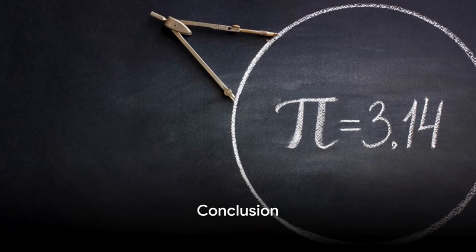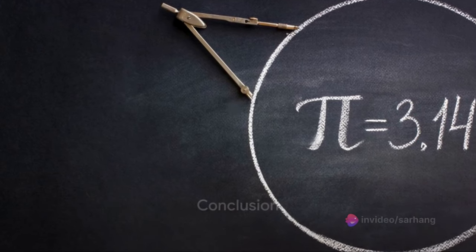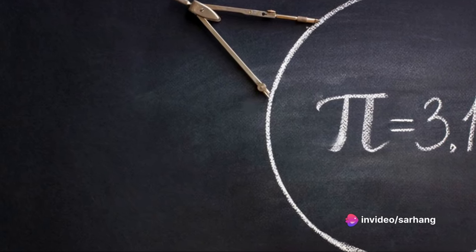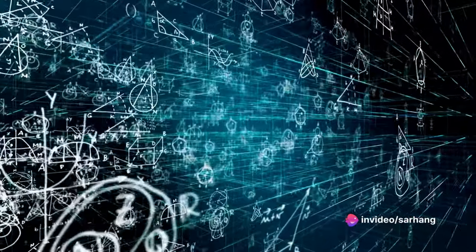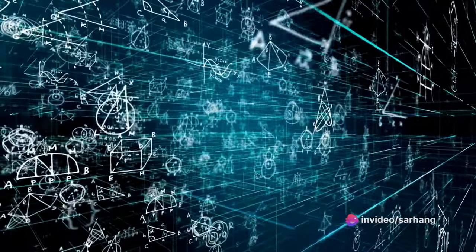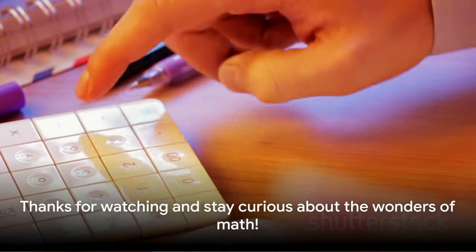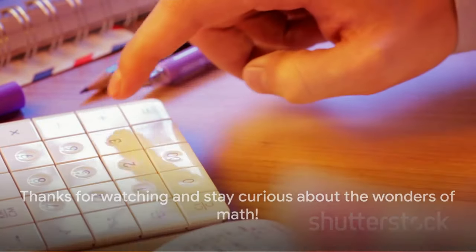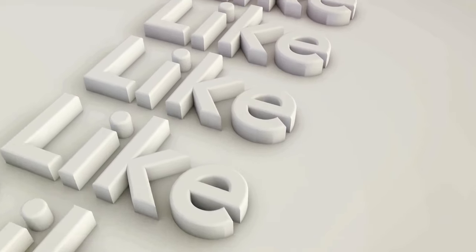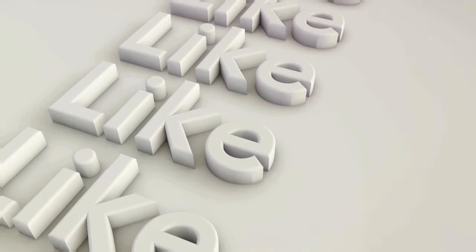So there you have it. We learned that pie is the constant ratio between a circle's circumference and its diameter. It's a number that pops up everywhere in math and science. Understanding pie unlocks a whole world of calculations. If you enjoyed this video, be sure to leave a like and subscribe for more explorations into the fascinating world of math. Thanks for watching.